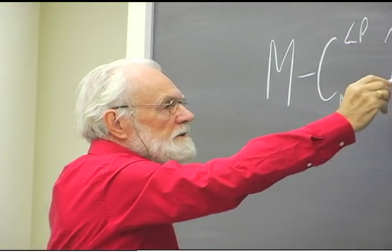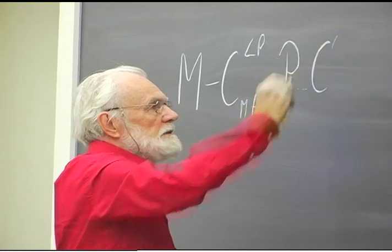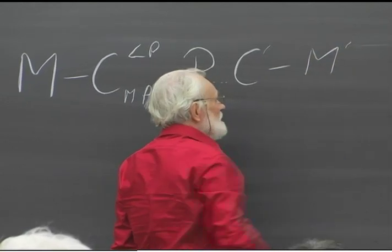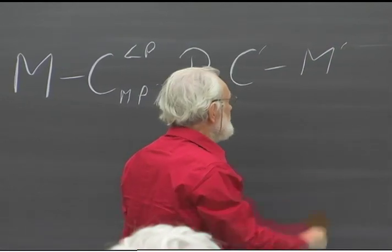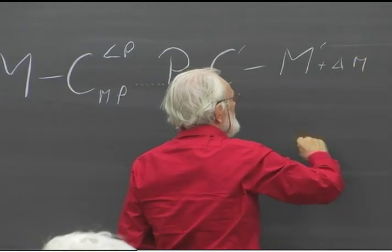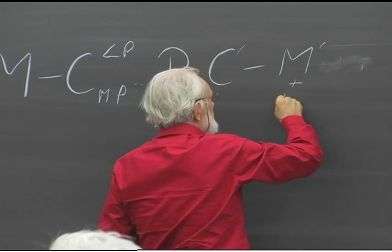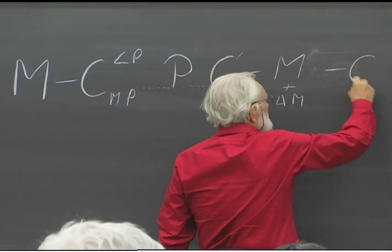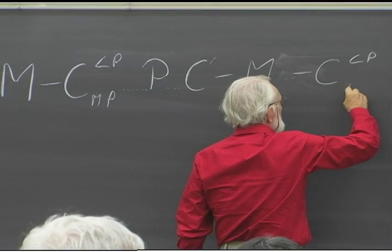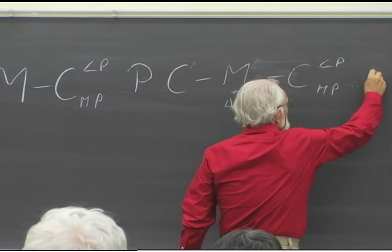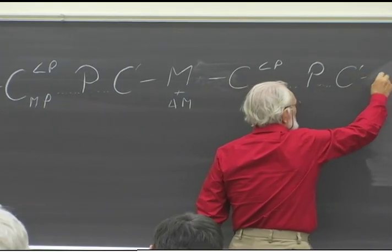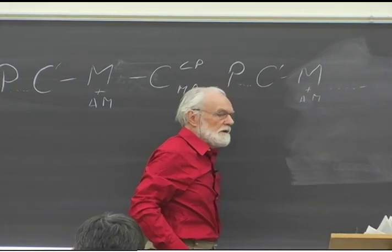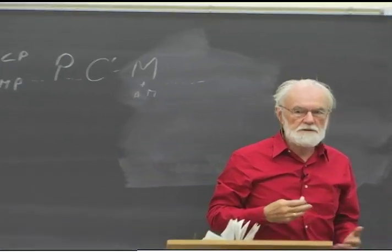You look at the circulation process: money is used to buy a commodity, and there are two kinds of commodities — labour-power and means of production. Those are then put together in production, which produces a different commodity containing the surplus-value, which is then sold for money plus the increment, plus delta M. Then you continue the process: once again we buy labour-power and means of production, go to production, produce another commodity, and go back to M plus another delta M. This is the ongoing process of capital circulation.